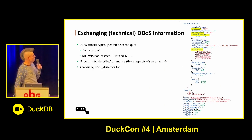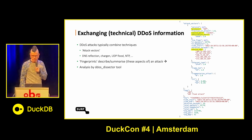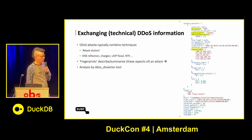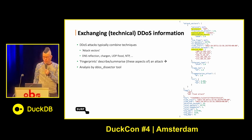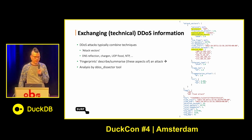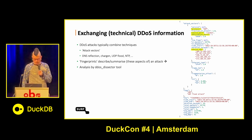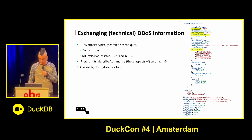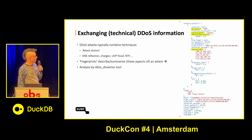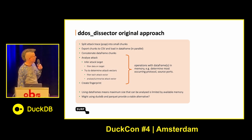What I'm talking about here is exchanging information about DDoS attacks — the technical DDoS information. And for that we use something we call fingerprints, which is essentially a JSON summary of all the attack factors that make up a DDoS attack. You can see a sample on the slide. We wrote a tool to do that, and the original tool was sort of studentware. Then a colleague from ISOC polished it up. But the approach is fairly simple.